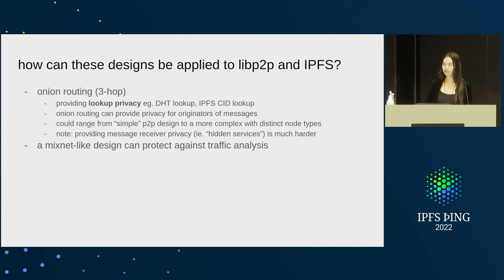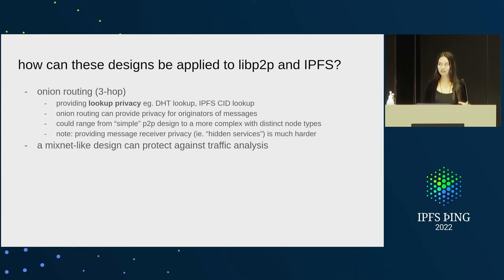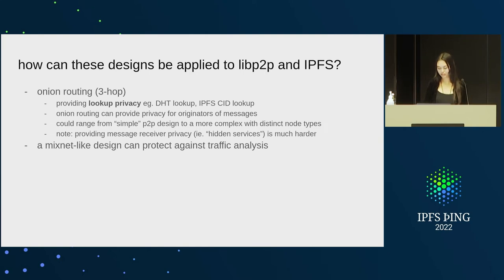An important caveat is that this would only provide lookup privacy. Providing anonymity for the receiver — acting like a hidden service — is much harder. Tor uses rendezvous points and many other mechanisms to achieve this, so that's unfortunately not covered here. A mix net-like design would protect more against traffic analysis, and the design could range from very simple and somewhat naive to very complex, depending on how much latency trade-off we're willing to accept.